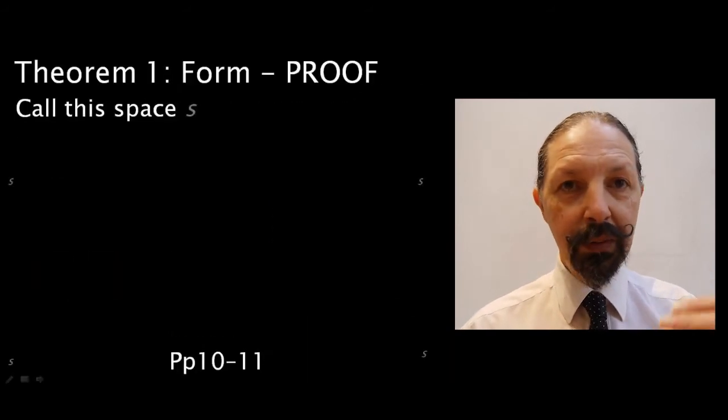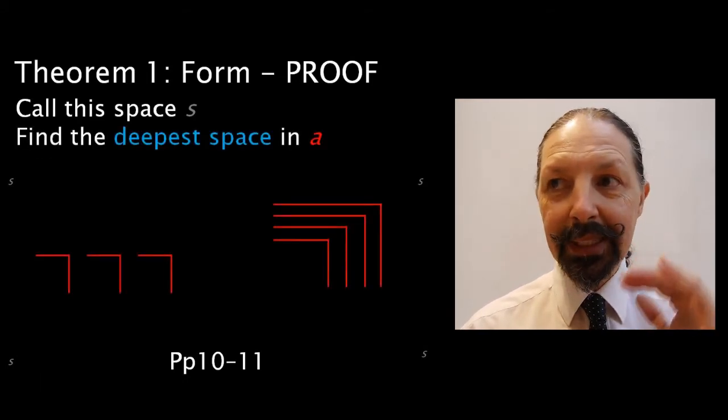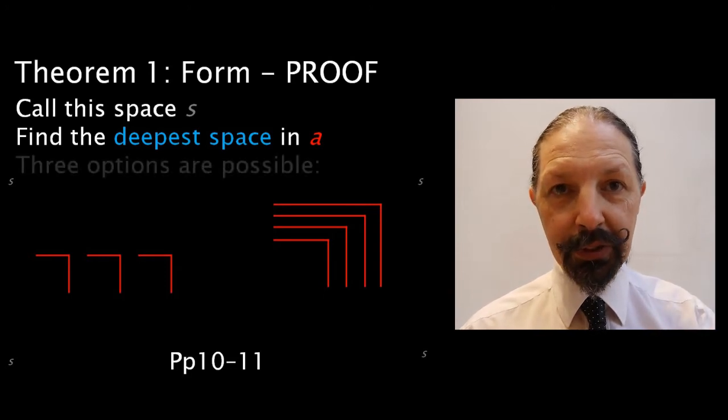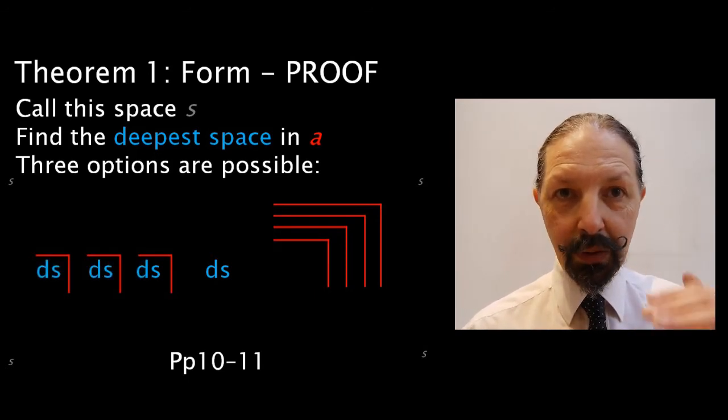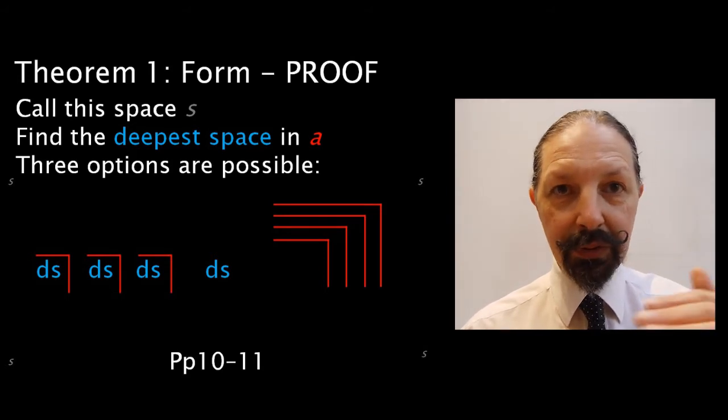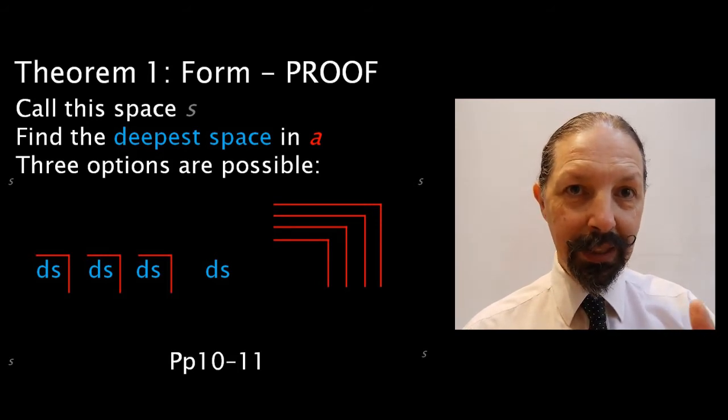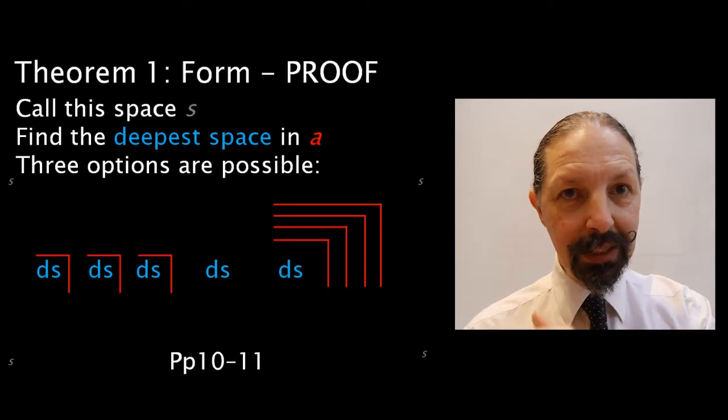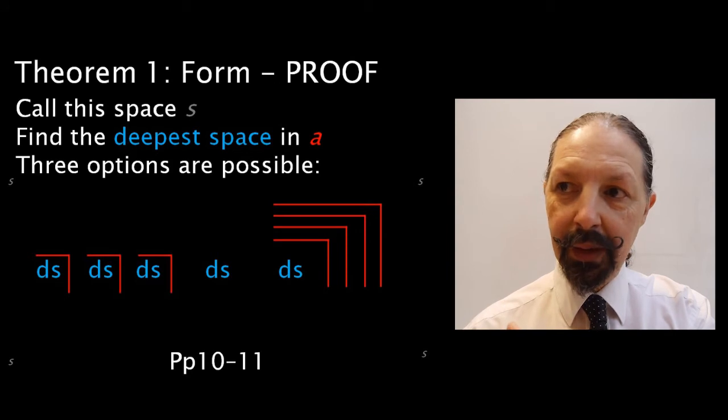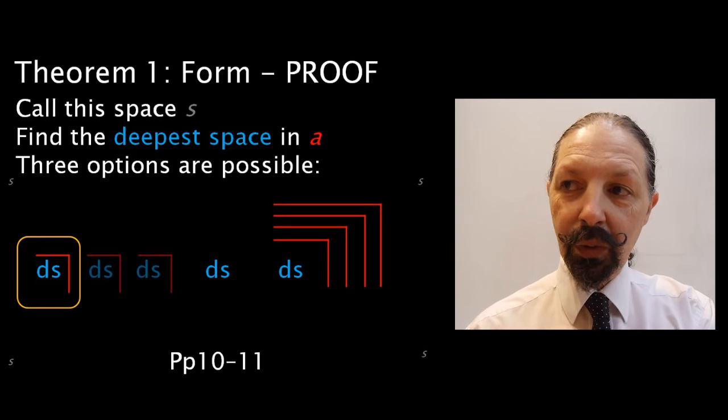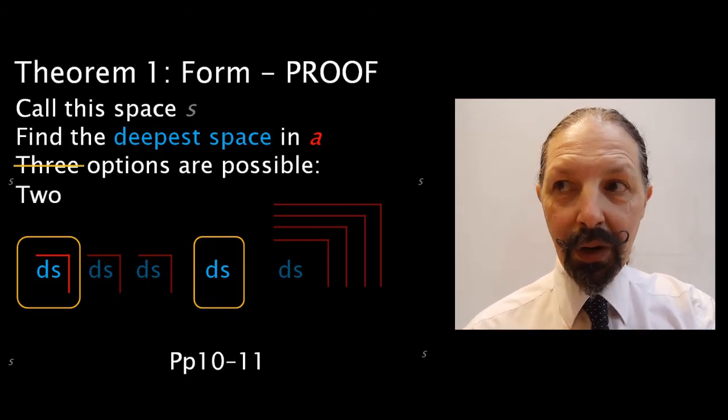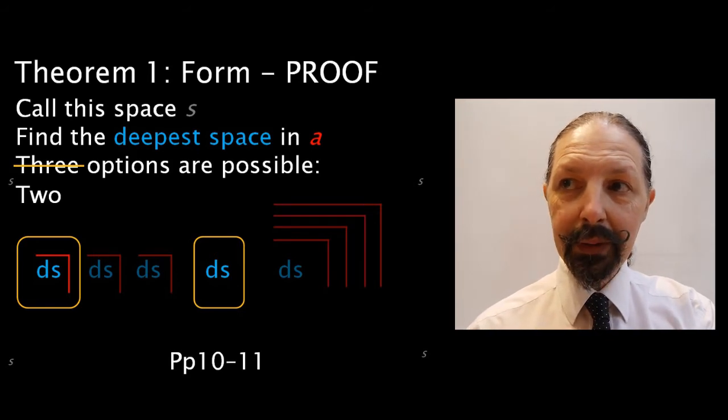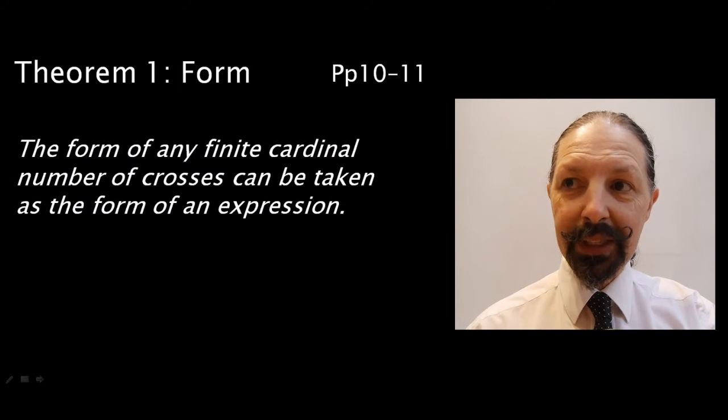Let's prove it. We start with a space, and we call the space S. In that space, we have an expression. We find the deepest space. Now, theoretically, three options are possible. We could have a lack of expression. So, the S is the deepest space. But he's talking about a finite number of crosses. So, on the left, we have a single cross, or an expression that boils down to it. And here we have three adjacent ones. And they all contain the deepest space in that expression. On the right, we have a series of nested crosses. And they're an even number, so you've got two pairs that can cancel out. The expression on the left, as I've mentioned, reduces to one mark. The expression on the right reduces to no marks, the unmarked state. So, actually, only two options are possible. Either marked or unmarked. So, the form of any finite cardinal number of crosses can be taken as the form of an expression.